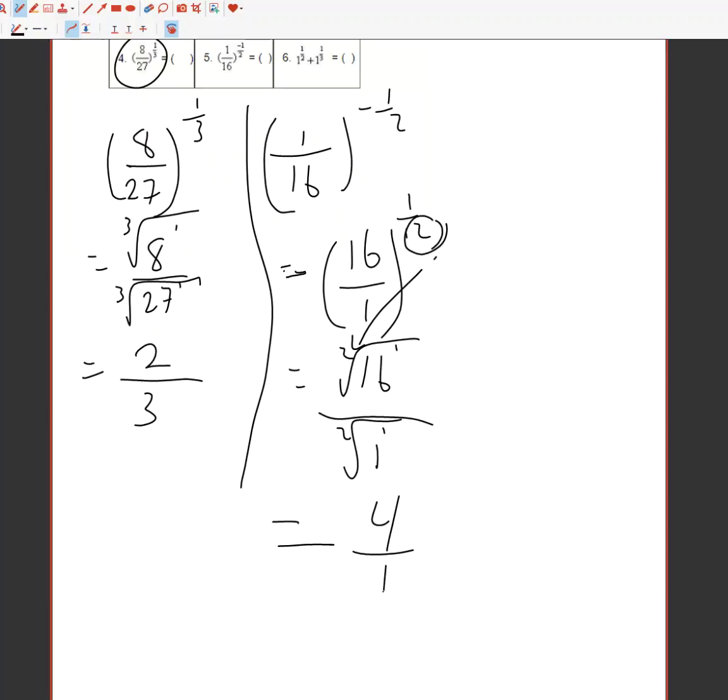The square root of 1 is 1. I can leave it like this or I could say 4 over 1 is just 4 so I'll make it look a little bit prettier this way. I like to put a box around the bottom as I go as well.